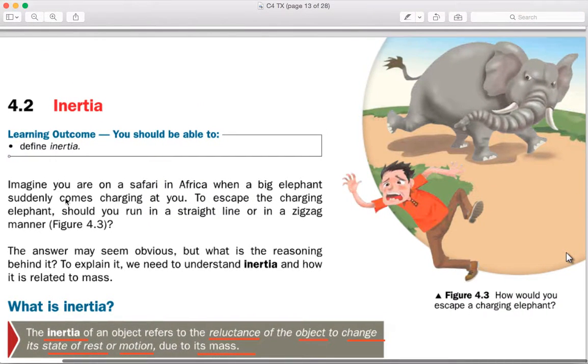Look at figure 4.3. Imagine you're on a safari in Africa when a big elephant suddenly charges towards you. To escape it, should you run in a straight line or in a zigzag manner? Because the elephant is much more massive than you, it has a lot of mass, it will have a lot of inertia. That means it will always be reluctant to change. So it's easier for you to run in a zigzag manner, because if you keep changing direction, then it will be very difficult for the elephant to change the direction of its entire body.